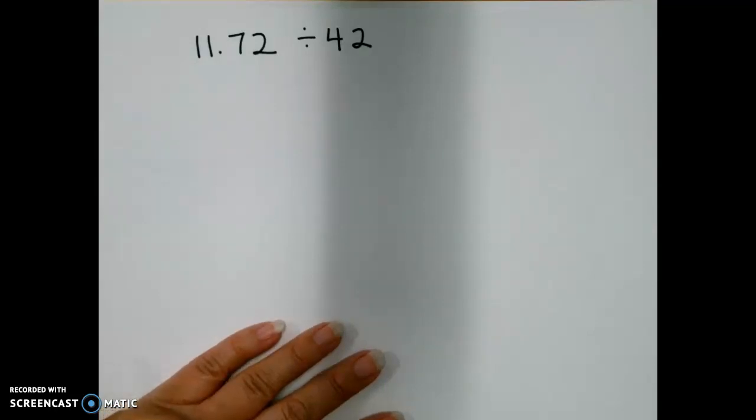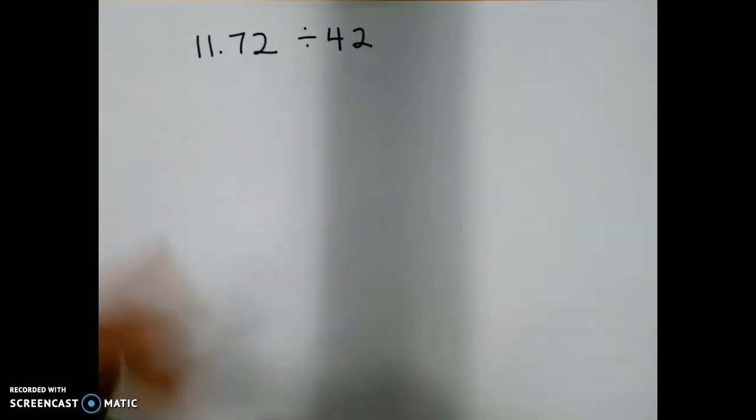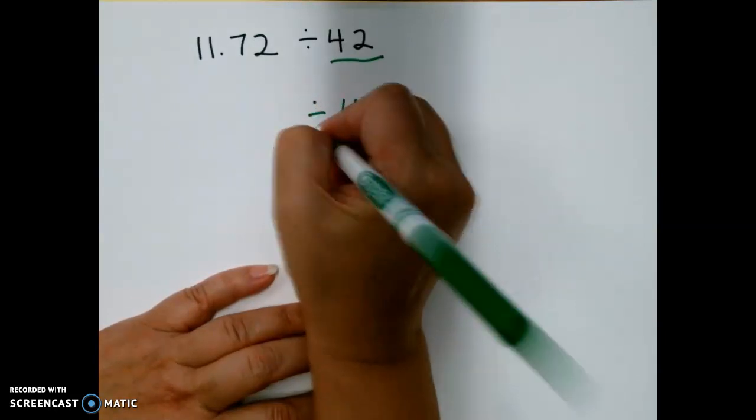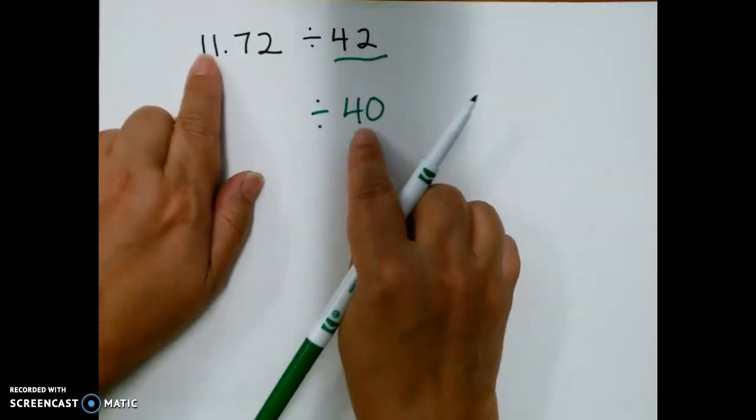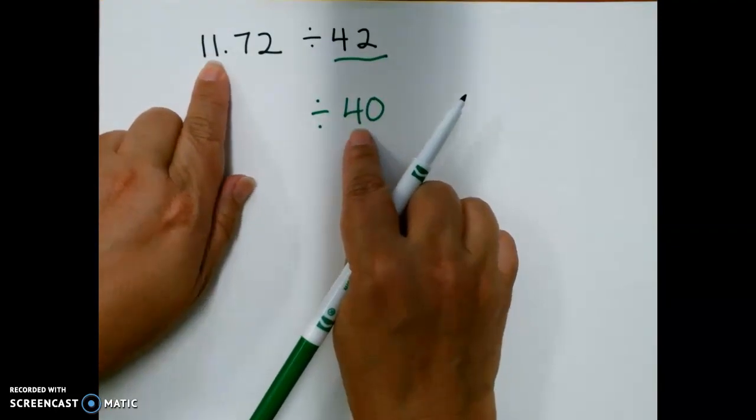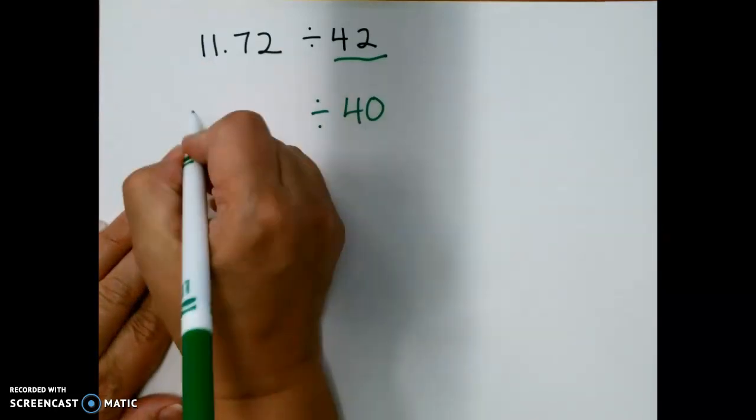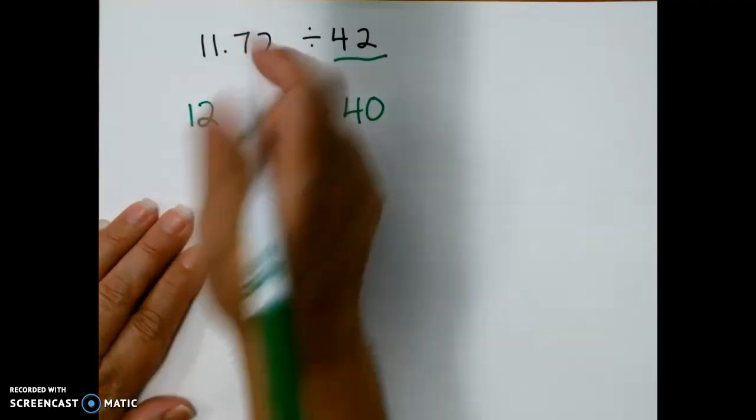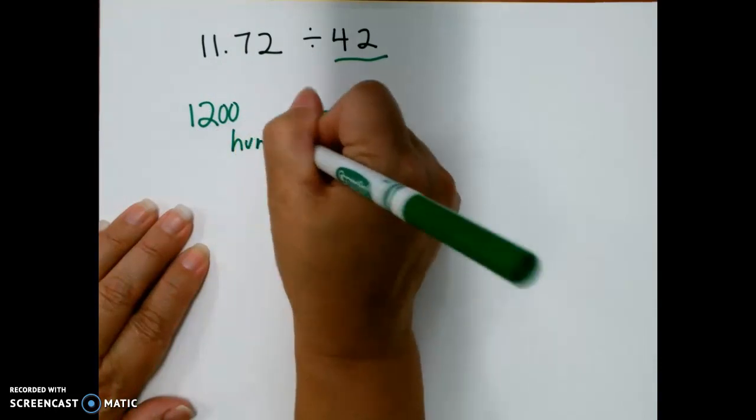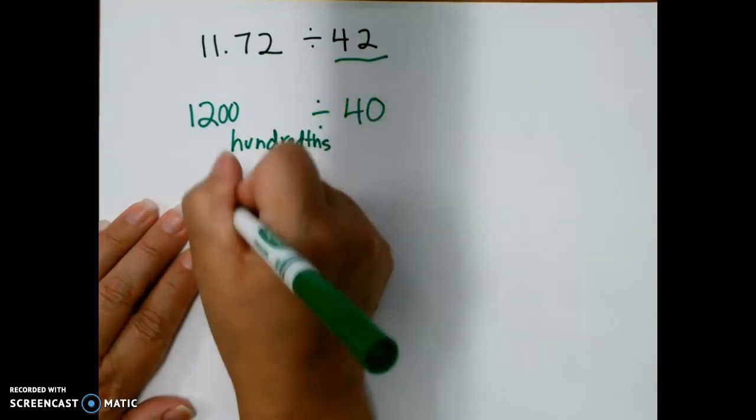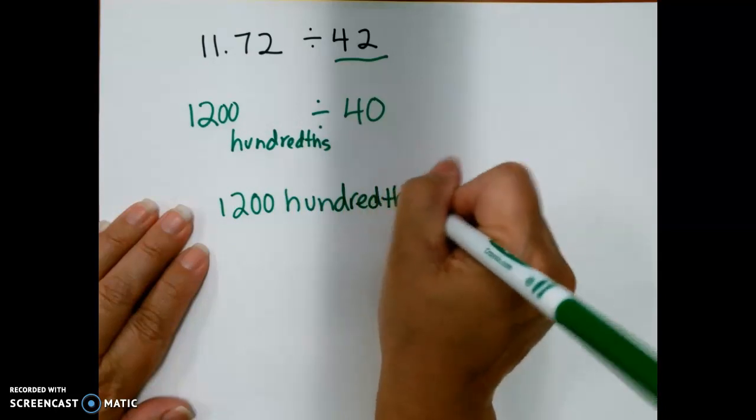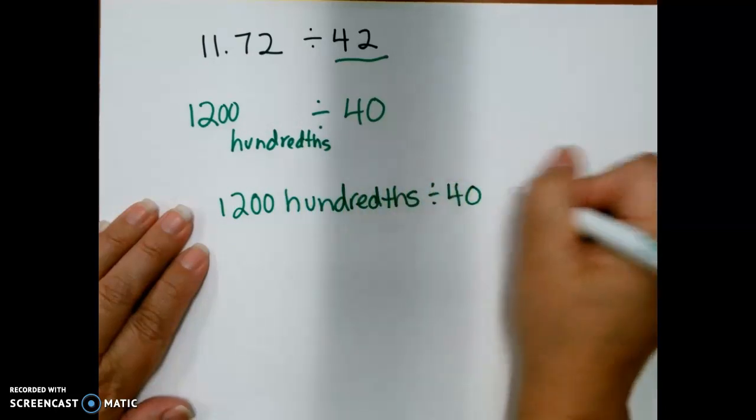Our last problem together is 11.72 divided by 42. So, again, very first thing we're going to do, we're going to estimate that divisor. So 42 is close to 40, and I'm dividing. Now, 11.72, 11 is close to what number that I could divide evenly by 4? It's close to 12. Now, to make my life easy, I'm going to say that this is 1200 hundredths. So 1200 hundredths divided by 40 equals what?